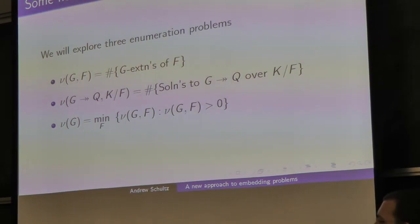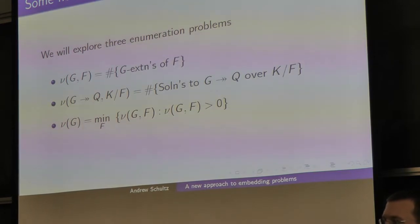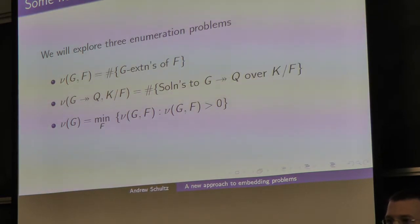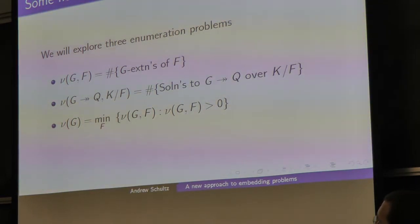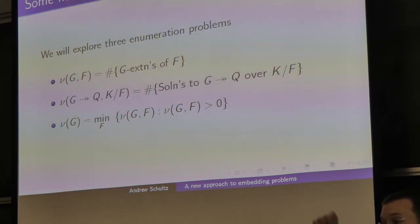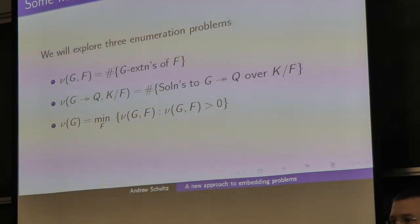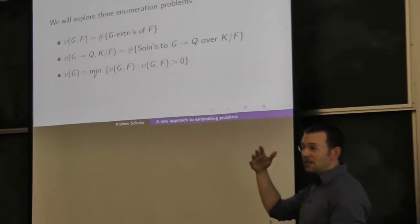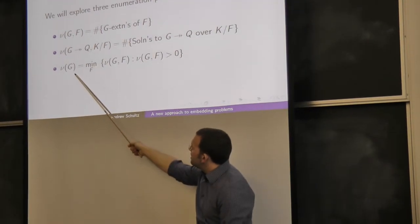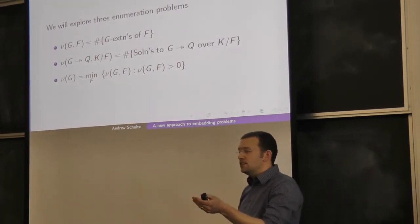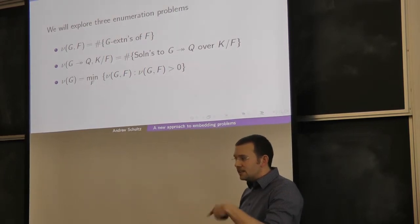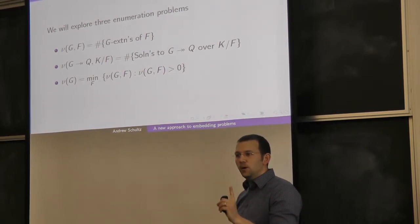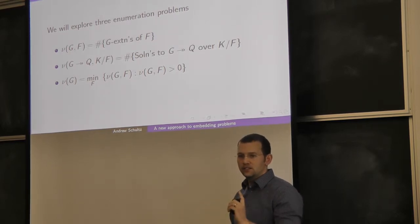The realization multiplicity for G is the smallest number of times a group can show up as a Galois group of some field — the minimum over all fields where G appears as a Galois group. For example, for finite fields the absolute Galois group is Z-hat, so for every n there is exactly one extension whose group is Z mod n. This means the realization multiplicity for any cyclic finite group is exactly one.